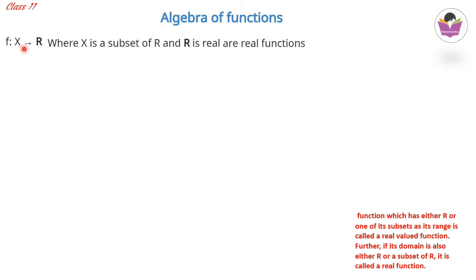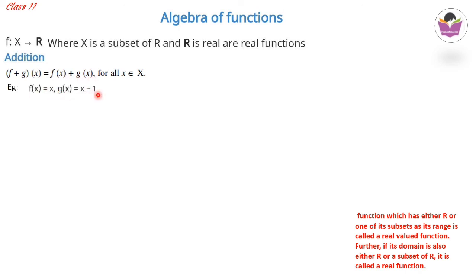For addition: (f + g)(x) = f(x) + g(x). Example: if f(x) = x and g(x) = x − 1, then (f + g)(x) = x + (x − 1) = 2x − 1.